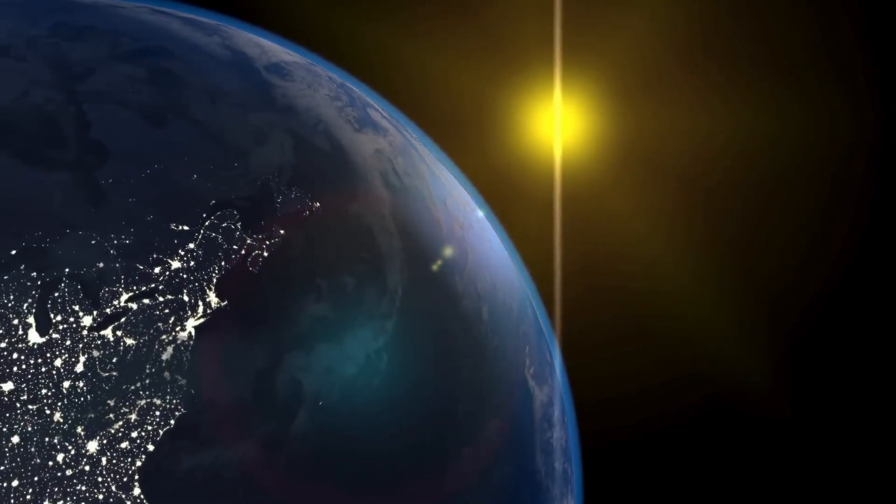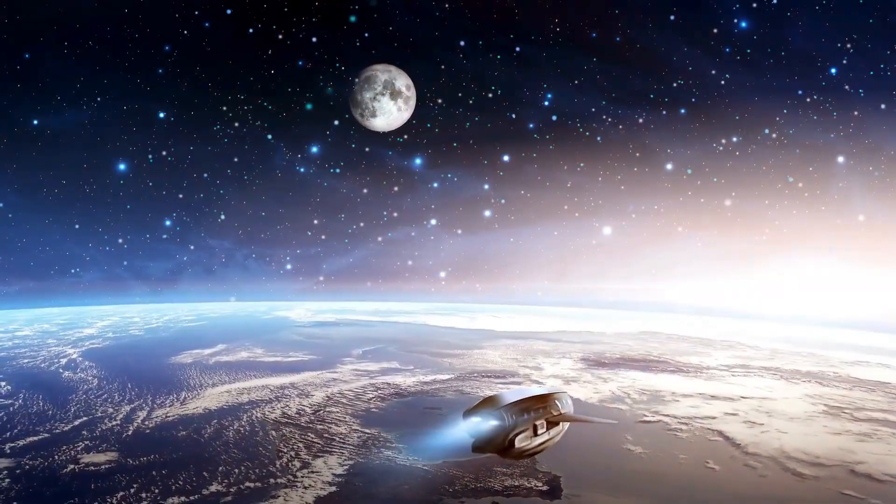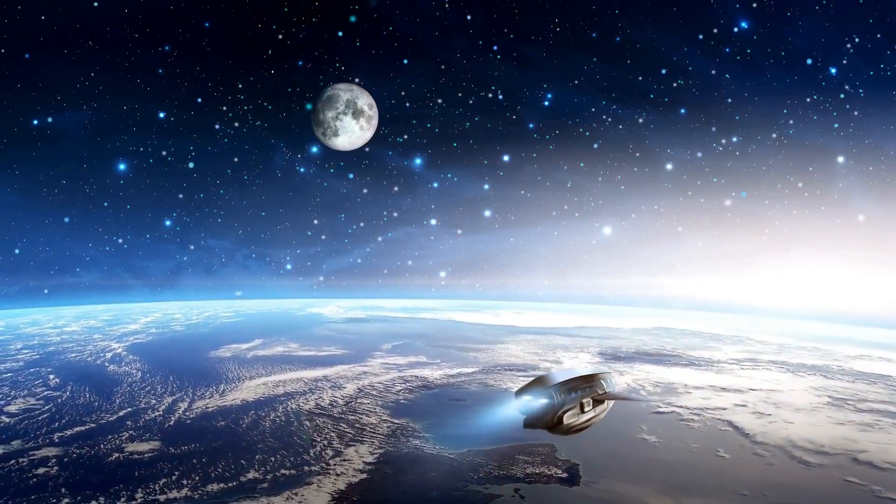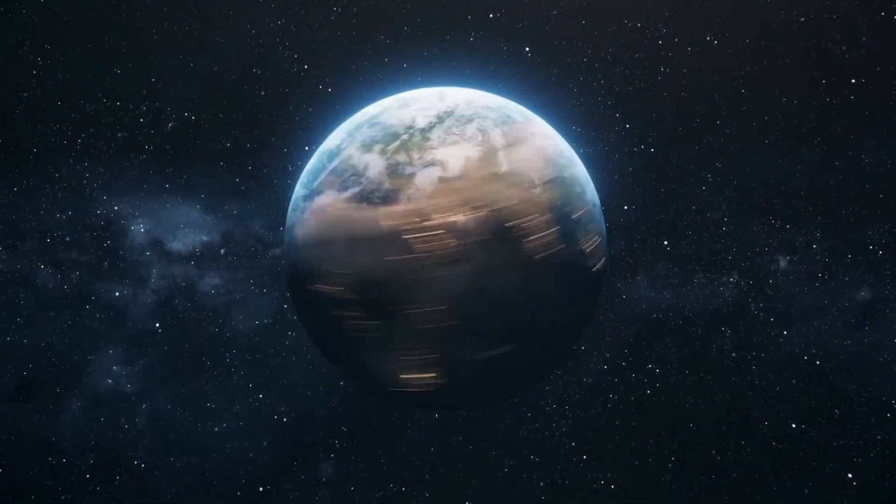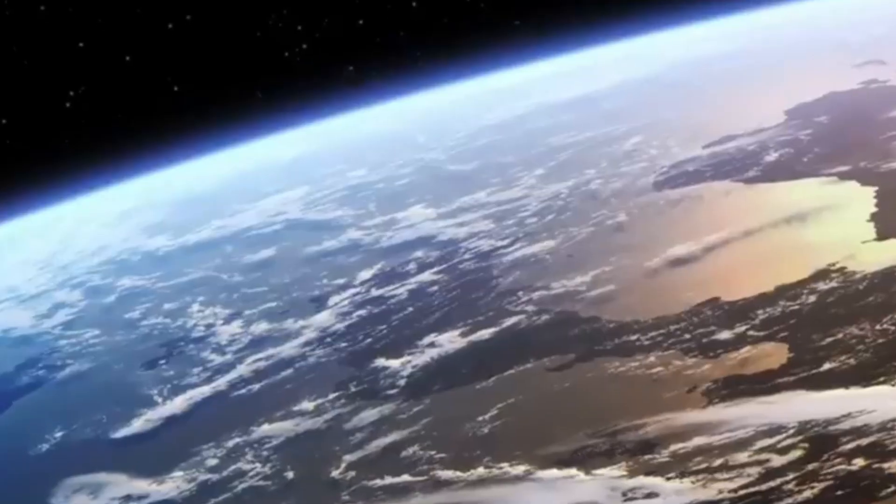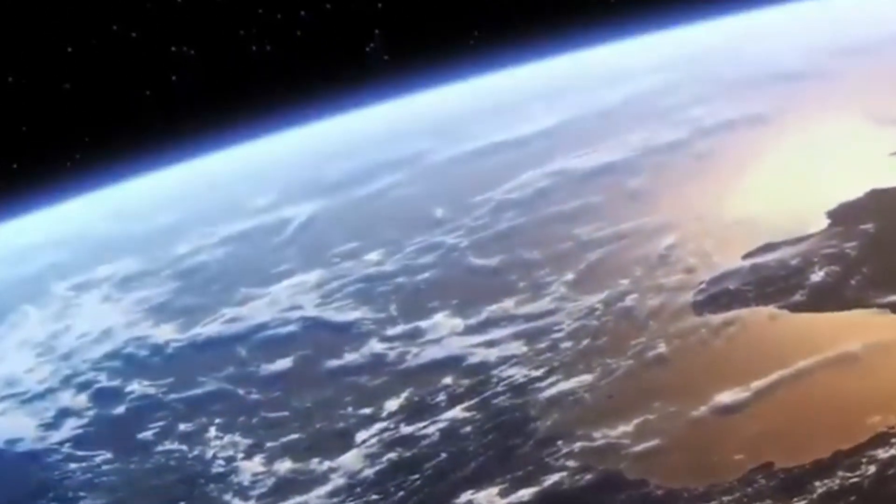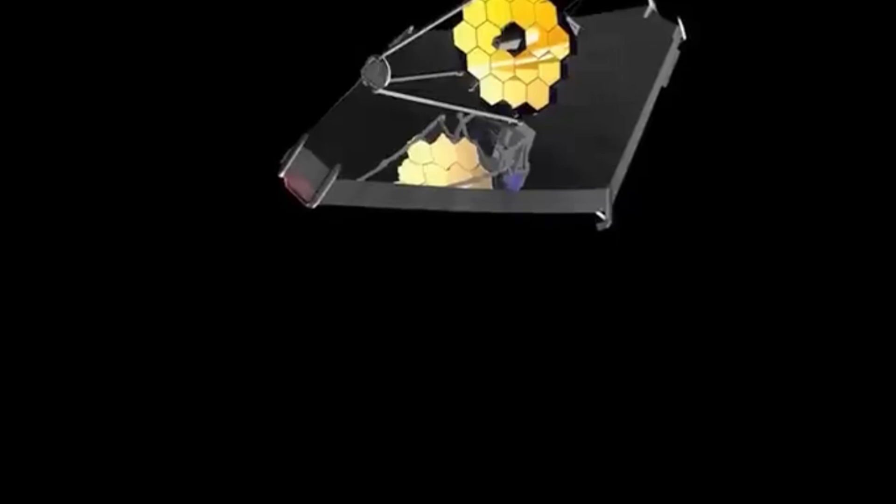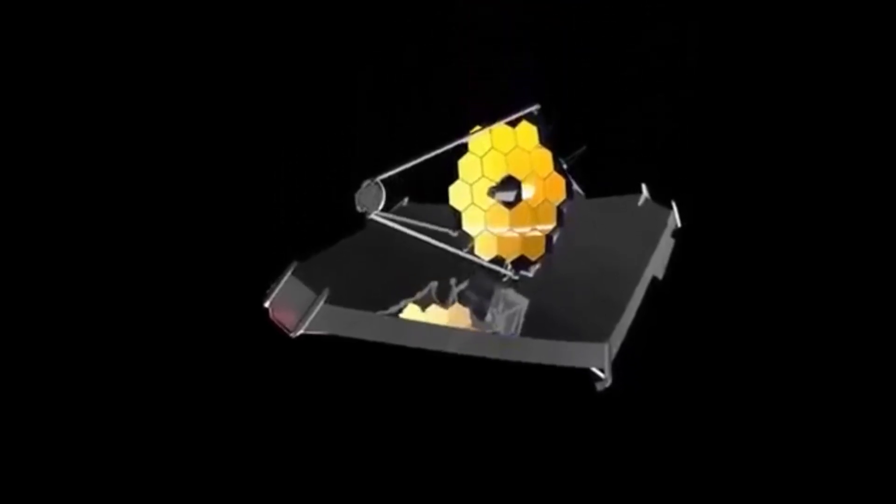Proxima b, with a mass 1.3 times that of Earth, is in the Goldilocks zone where conditions might allow liquid water to exist. However, Proxima b's close orbit, just 4.6 million miles from its star, exposes it to intense solar winds that could strip away its atmosphere.